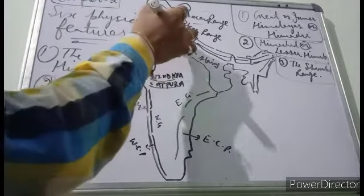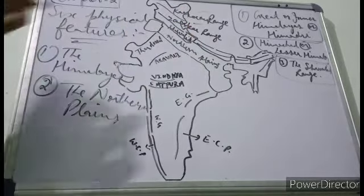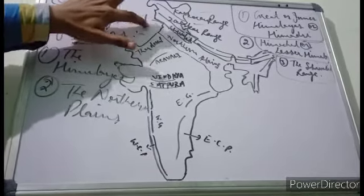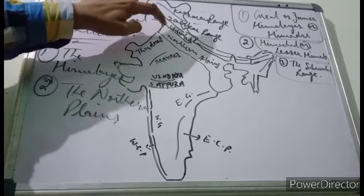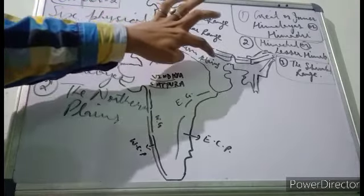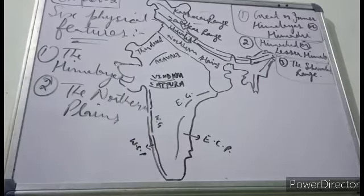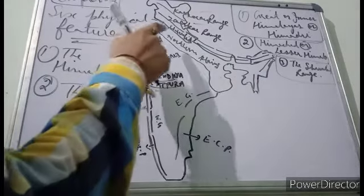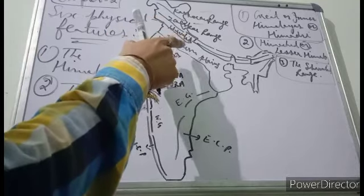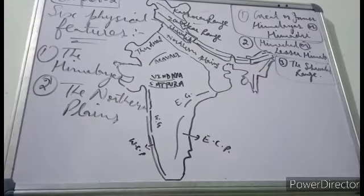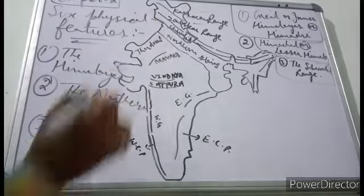The Northern Plains actually begin from the Pakistani Punjab side, but that part went to Pakistan, so we count the beginning of the Northern Plains from Indian Punjab. Within India, the Northern Plains cover Punjab, Haryana, Uttar Pradesh, Bihar, and West Bengal. Even Bangladesh is geographically part of the Northern Plains but is a separate country. Some parts of Tripura are also part of the Northern Plains.